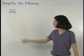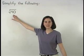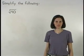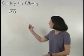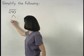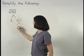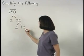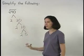To simplify the square root of 40, notice that 40 is not a perfect square. So let's start by setting up a factor tree. 40 factors as 2 times 20, 20 factors as 2 times 10, and 10 factors as 2 times 5.